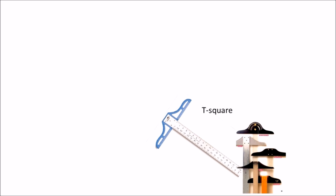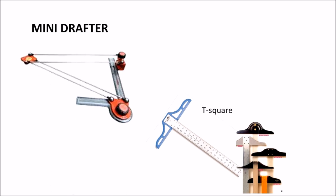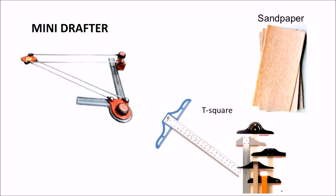T square is an instrument which is used to make perpendicular and parallel lines with an accurate measurement. Coming up to the mini drafter which is most frequently used by engineers to draw parallel and perpendicular lines or any of the inclined lines by fixing the mini drafter on the board. Sandpaper is used to rub down the nibs of the pencils and make them sharper pointer to have proper width of the line.